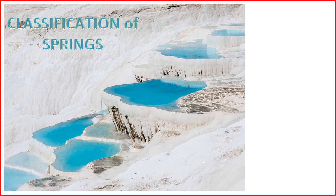12. Geyser Springs — geyser springs are characterized by periodic eruptions of water and steam. These eruptions are driven by underground geothermal activity and are often associated with volcanic regions. These classifications highlight the diversity of springs, each with its unique characteristics based on geological, hydrological, and environmental factors.